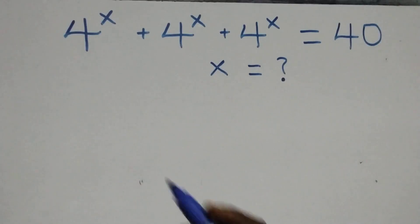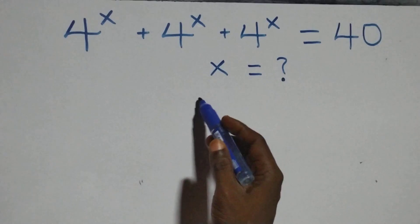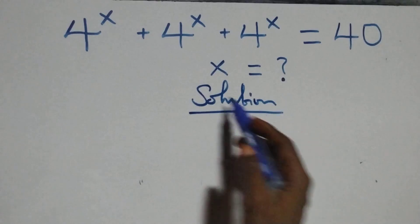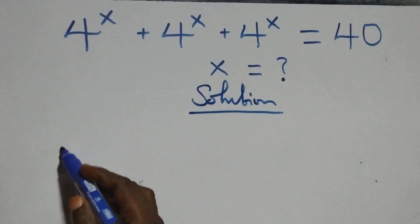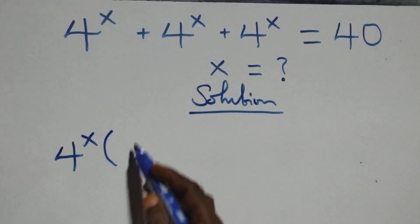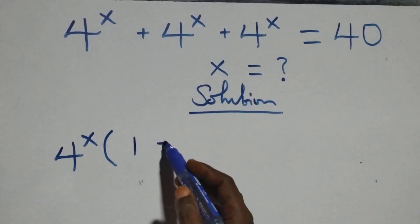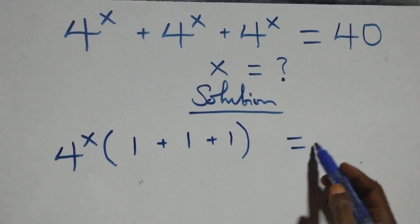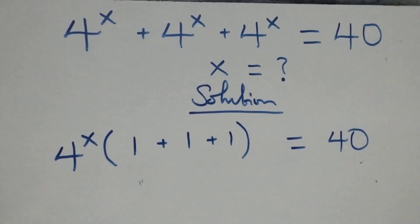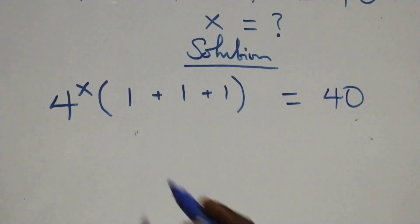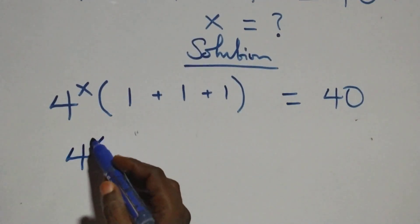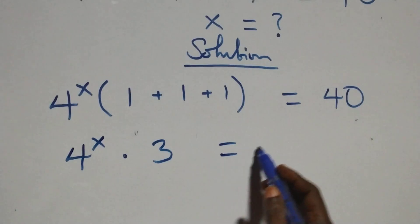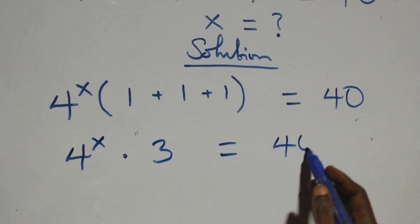Hello, you are welcome. How to solve this nice exponential equation. From here, we factor 4 raised to power x out. We have 4 raised to power x into brackets: 1 plus 1 plus 1, which equals 40 on this side. This becomes 4 raised to power x times 3 equals 40.